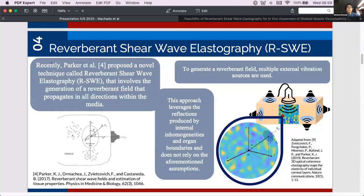So that's where things differ with this new approach that we've used. So recently Parker et al. proposed a novel technique called reverberant shear wave elastography that involves the generation of a reverberant field that propagates in all directions within the media. This approach is able to leverage the naturally produced reflections. And in order to generate a reverberant field, multiple sternum vibration sources are used.